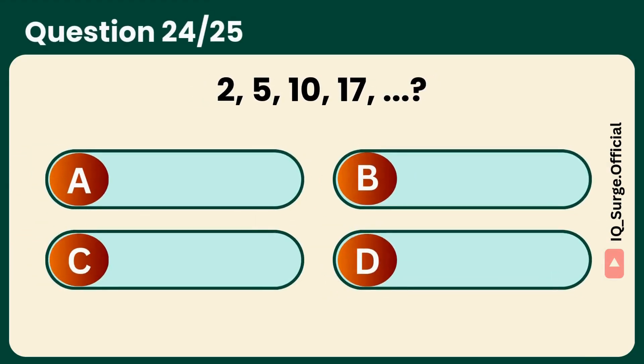What's the missing number? Answer: 26 plus 3 plus 5 plus 7 plus 9.